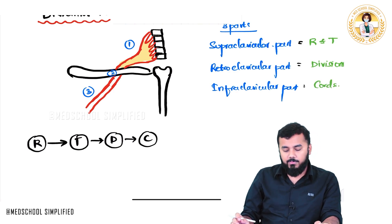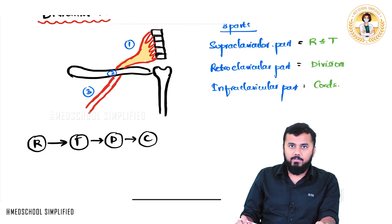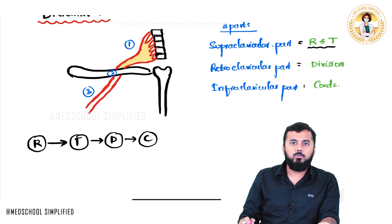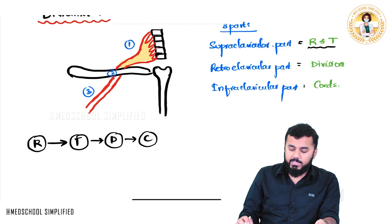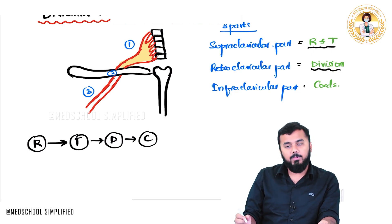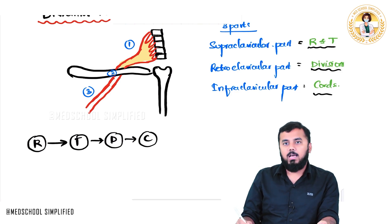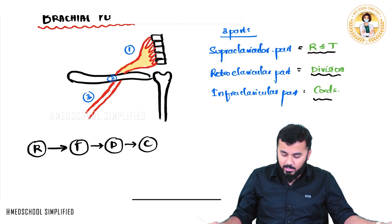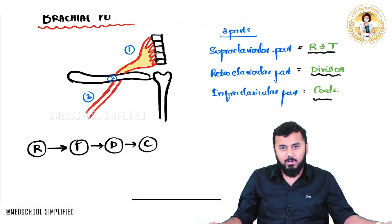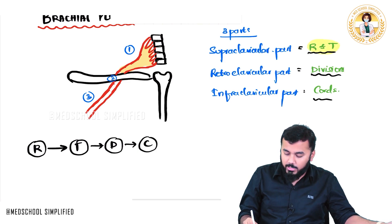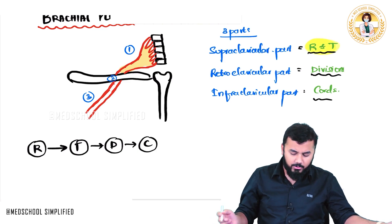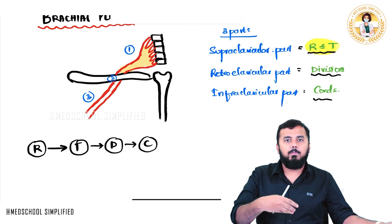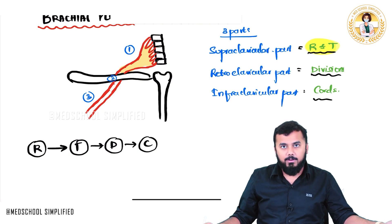So if there is any injury above the clavicle, the roots and trunks are affected. If there is a clavicular fracture, the divisions might be affected, and below the clavicle the cords are affected. Supra-clavicular has the roots and trunks because that is the initial part where the brachial plexus is emerging.